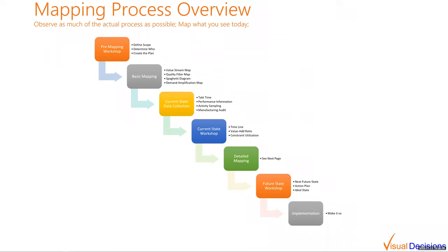Let's take a high-level look at the overall mapping process. It usually begins with a kickoff workshop where we define the scope — what value stream will be the focus? Is it for a single product, a product family, or something else? We may need to do a product family analysis to group products together. Other typical steps include determining who needs to be involved, creating the plan, and possibly creating a brown paper chart — a rough high-level flow of materials through the manufacturing process.